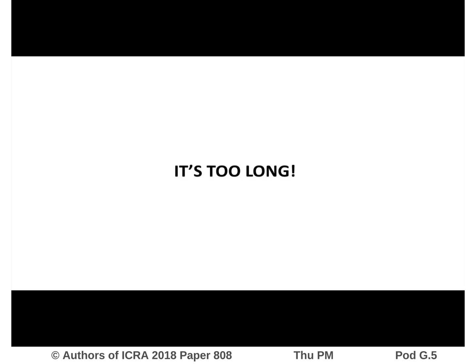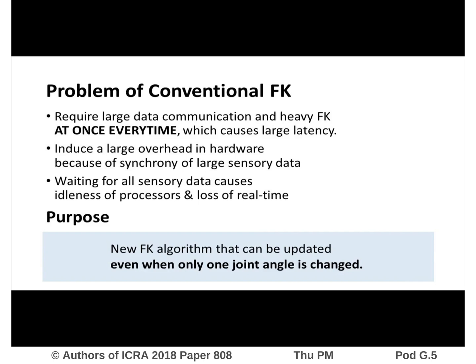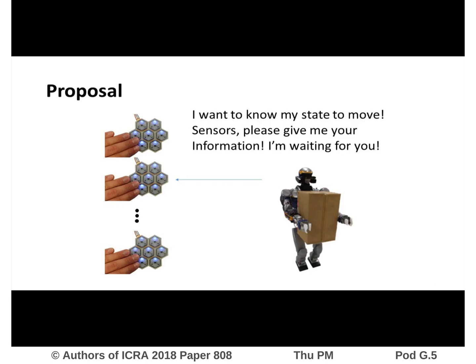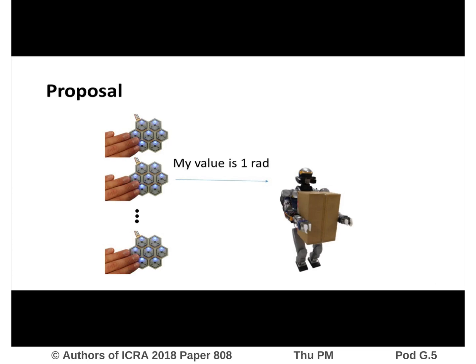For large degrees of freedom robots, an efficient forward kinematics algorithm that can process a query to change only one joint is preferable. In the proposed method, the robot waits for events from sensors, and once it receives an event, it immediately updates its forward kinematics.